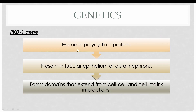The genes involved in the disease include PKD1 and PKD2. PKD1 encodes a protein known as polycystin 1, which is present in the tubular epithelium of the distal nephrons. It forms cilia that extend into the lumen of the tubules from the apical surface of the tubular epithelium, and also forms domains involved in cell-to-cell and cell-to-matrix interactions.